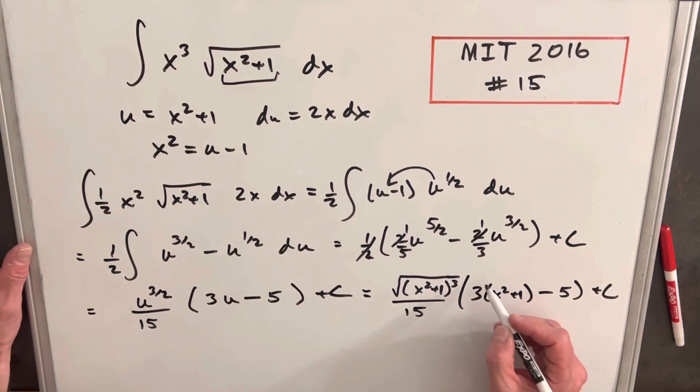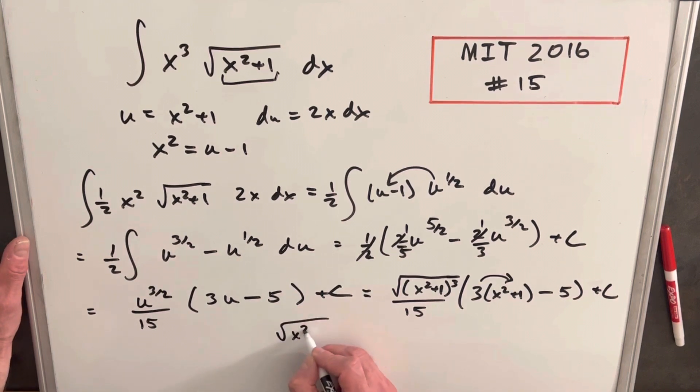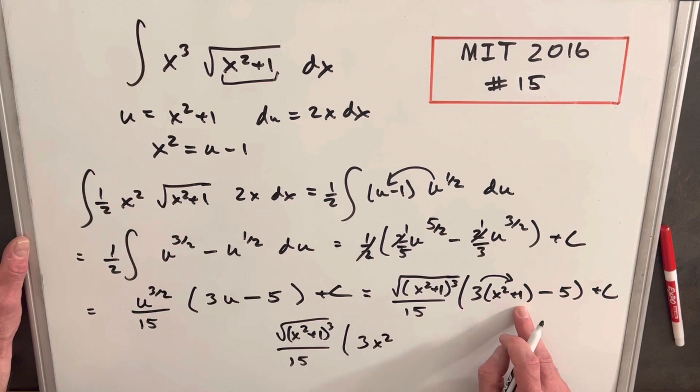And then just one final thing to clean this up. We're just going to substitute this in here. So for our final solution, we'll have this x squared plus 1 cubed over 15 times 3x squared. We're going to have 3 times 1 is 3 minus 5. We're going to have a minus 2 here plus c.